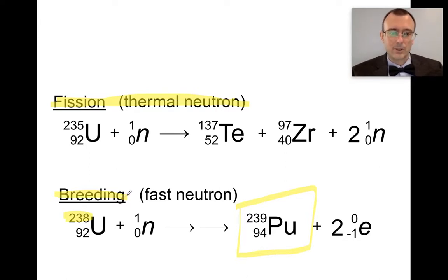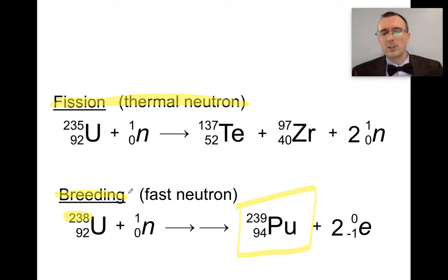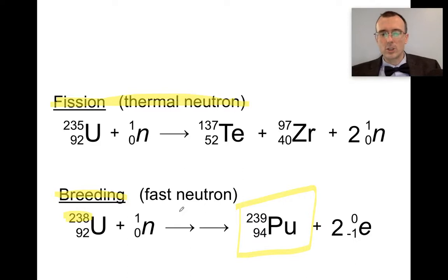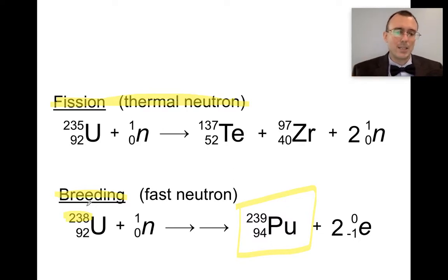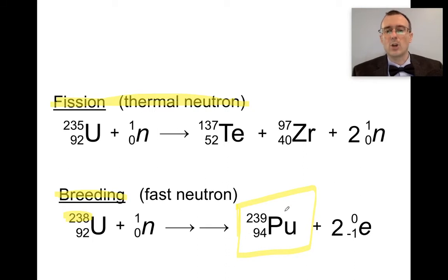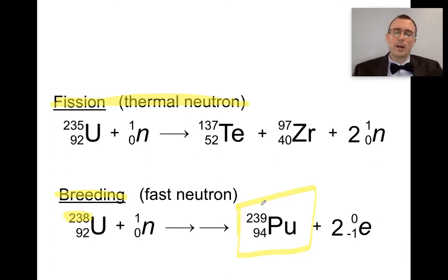Breeder reactors can be extremely efficient in terms of using more of that nuclear energy that is in your material. If you increase the efficiency, you're also going to decrease the amount of nuclear waste produced. Nuclear waste is all that extra junk that is radioactive but you can't use. Breeding has the capability of taking those unusable radioactive materials and turning them into usable fuels. Ideally, you want a nuclear power plant that has zero waste and uses up all of the nuclear energy, and breeding is one way to do that.